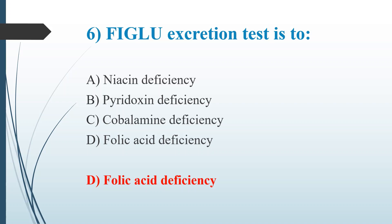Other options: Niacin deficiency leads to Pellagra. Pyridoxine deficiency, that is vitamin B6 deficiency, leads to mental status changes, normocytic anemia, glossitis, depression, etc. Cobalamin deficiency, that is vitamin B12 deficiency, causes anemia.